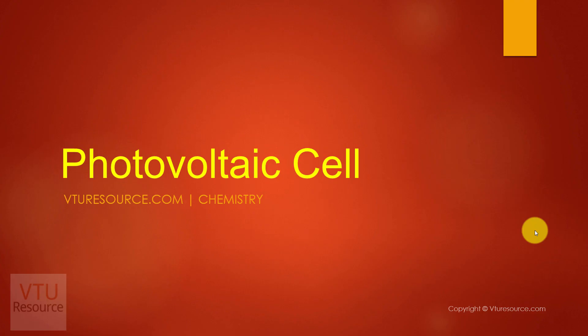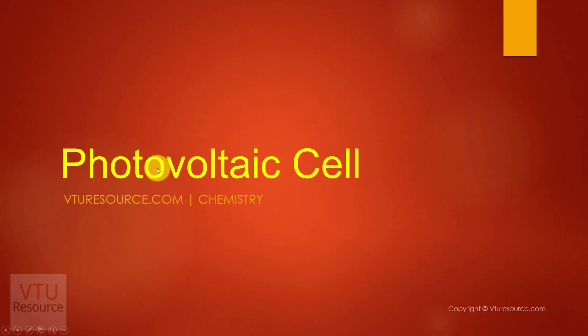The answer is PV cells or photovoltaic cells. What are these PV cells? PV cells are the devices which convert light energy into electrical energy. Let us discuss the construction and working of PV cells. PV cells are semiconductor diodes.